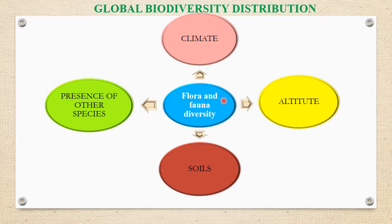These factors — climate, altitude, soils, and the presence of other species — make variations among the different variabilities of life forms, and different ecosystems vary from one another. The difference in climate, altitude, soil properties such as texture or color, or the presence of other species — whether in the form of mutualism, commensalism, parasitism, or any other form — all contribute to this variation.